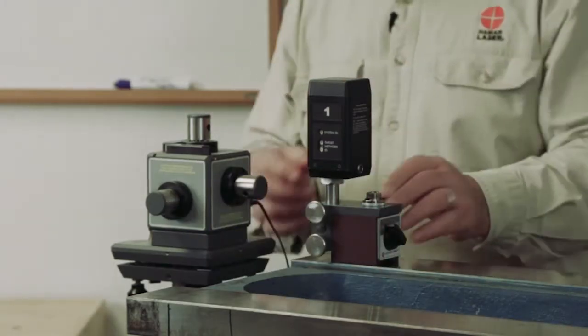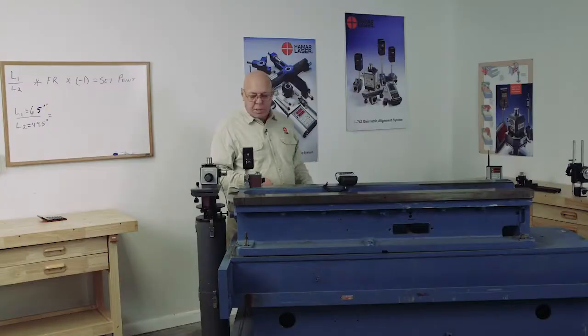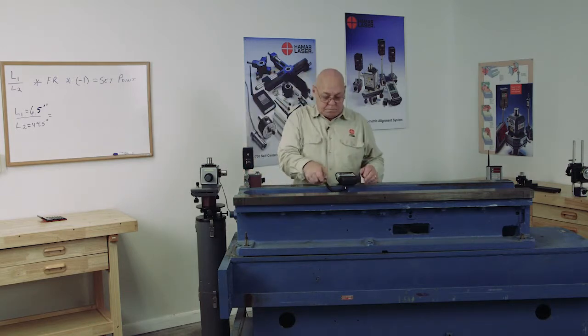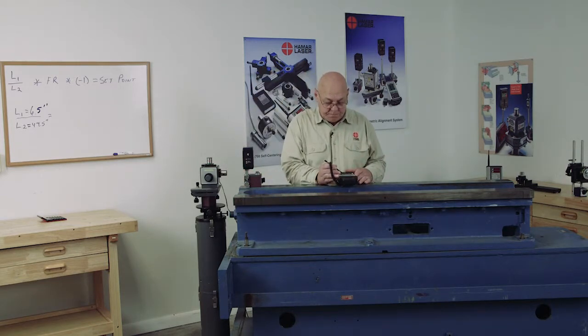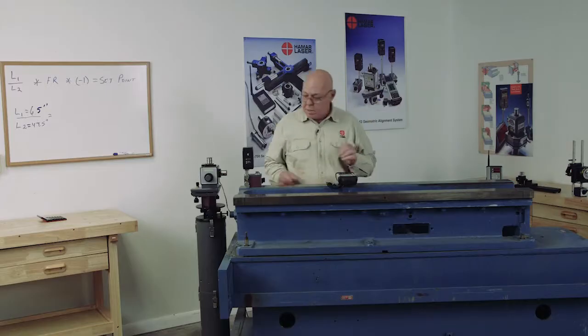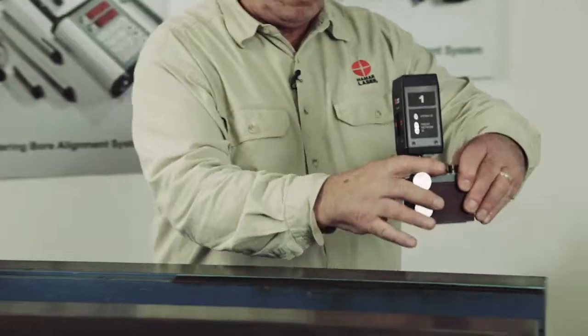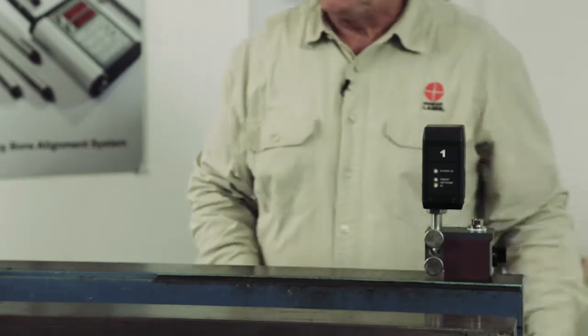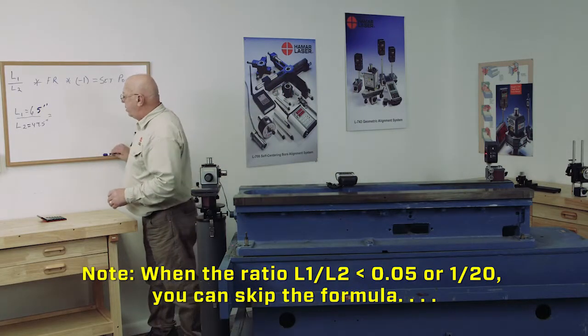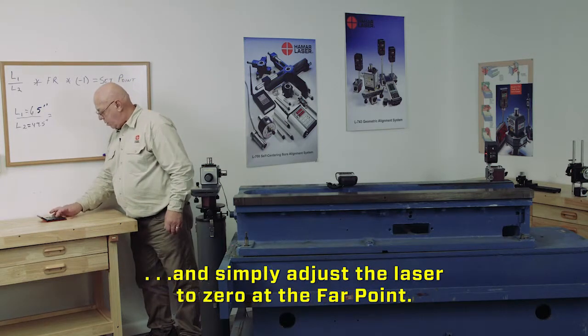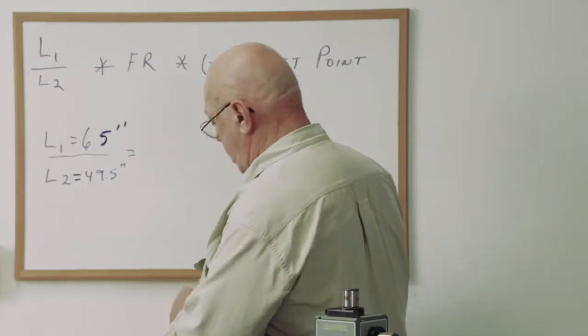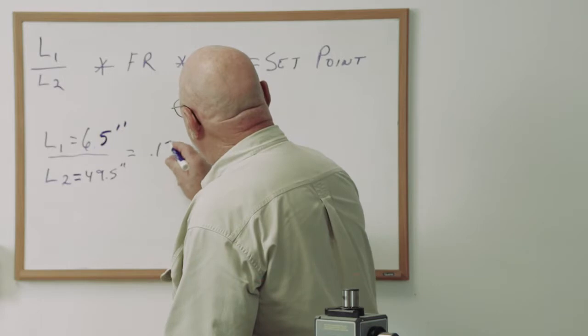So we set this up. I'm going to turn the laser on, and we're going to get some numbers. I'm going to make this zero, just like we did with the two-point buck end. And I'm going to take this down to the far point, and just get a far reading. I'm not going to adjust this yet. I'm going to do my math here. I'm going to take my 6.5 divided by 49.5, and I get 0.1313.